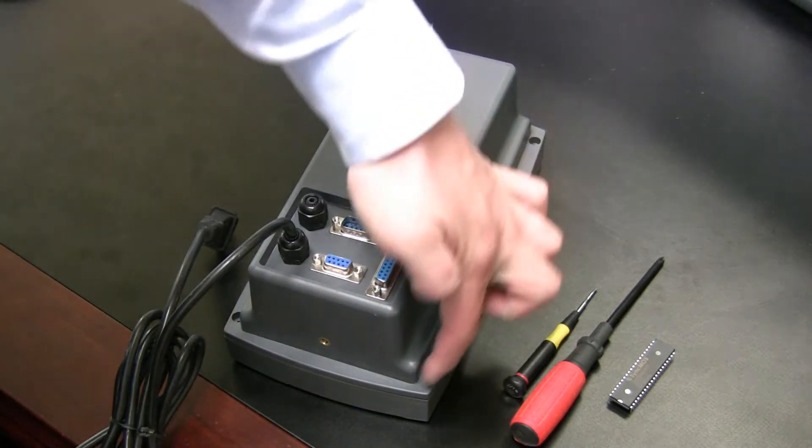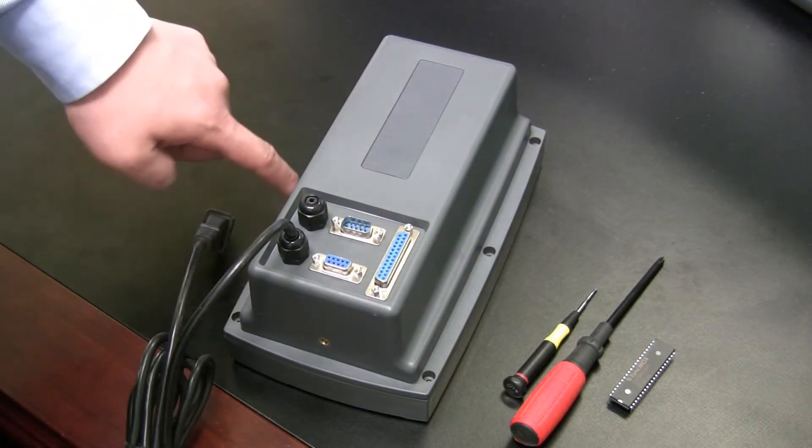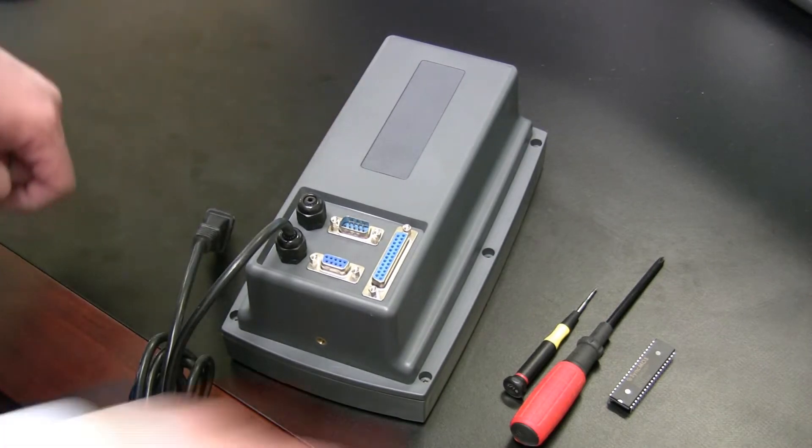To replace the chipset, remove the six screws on the back of the indicator using the Phillips screwdriver.